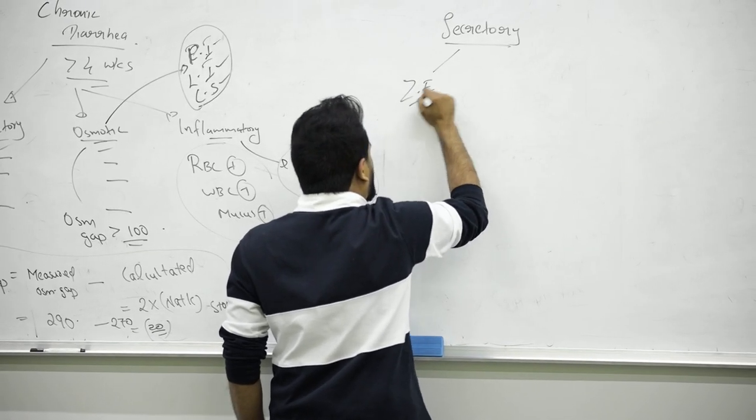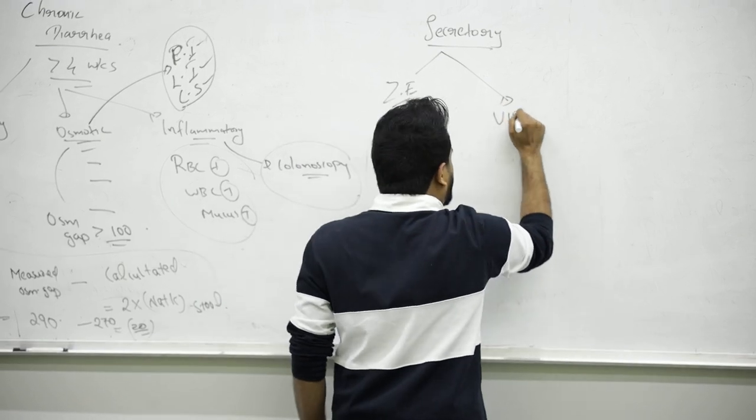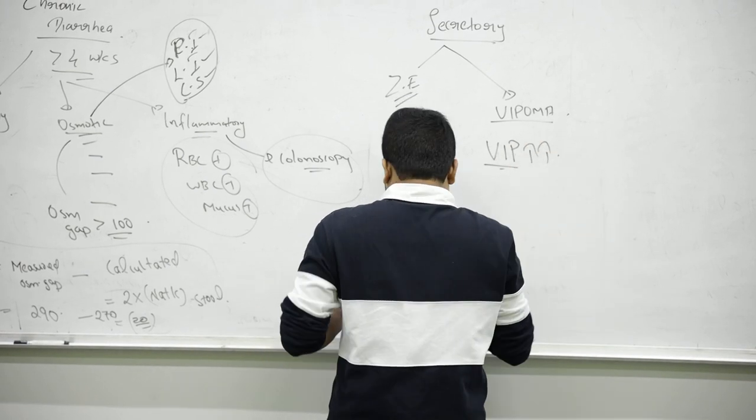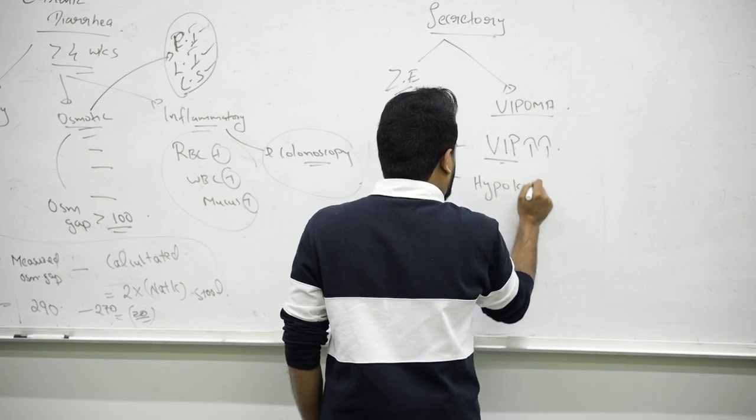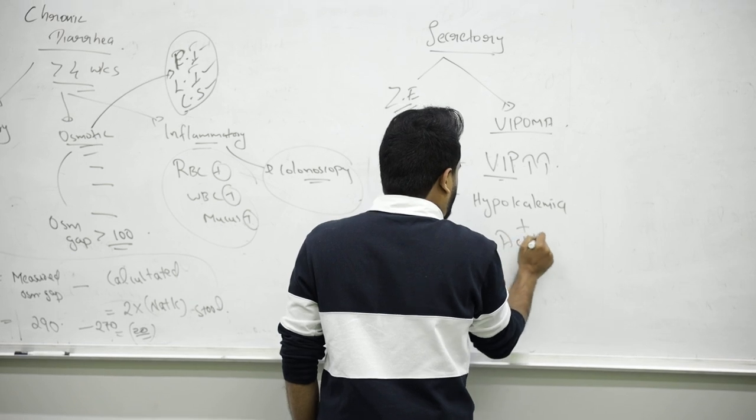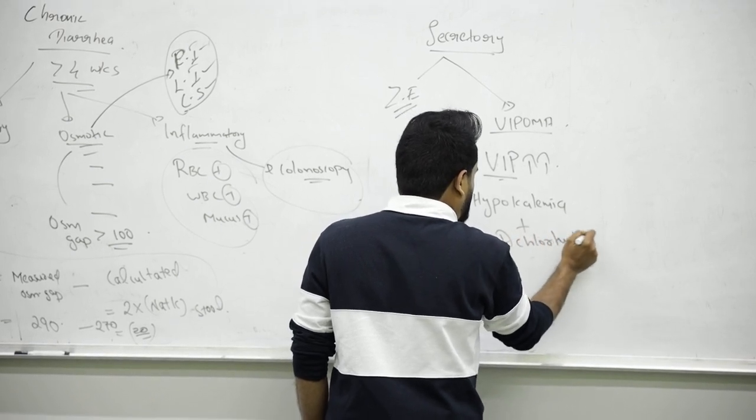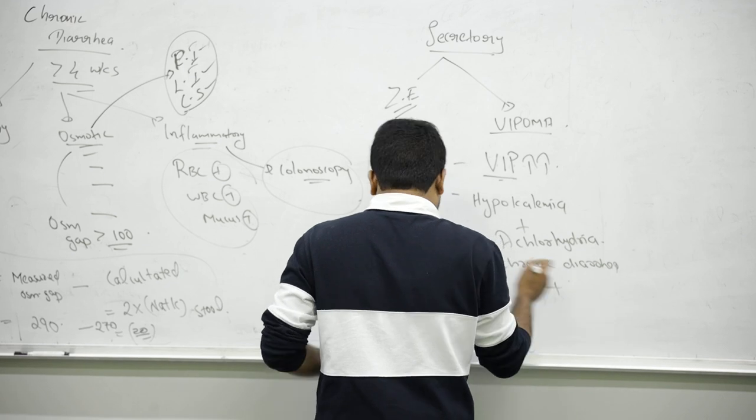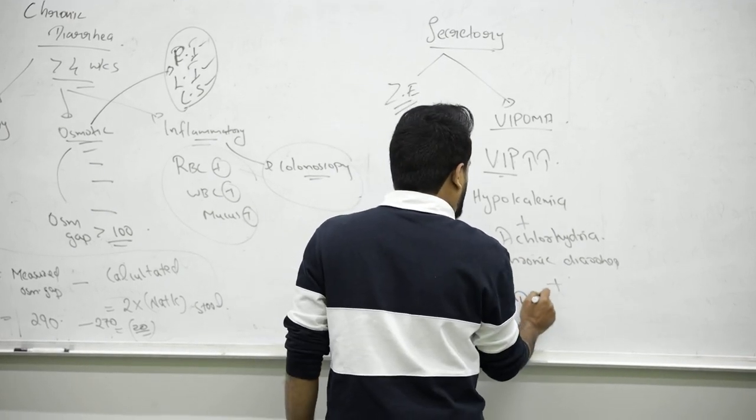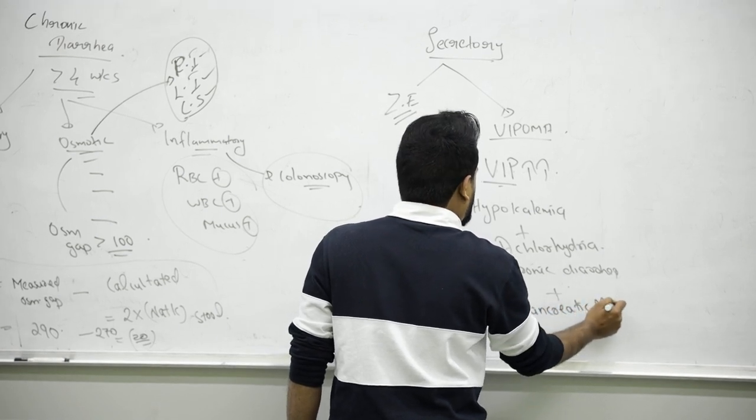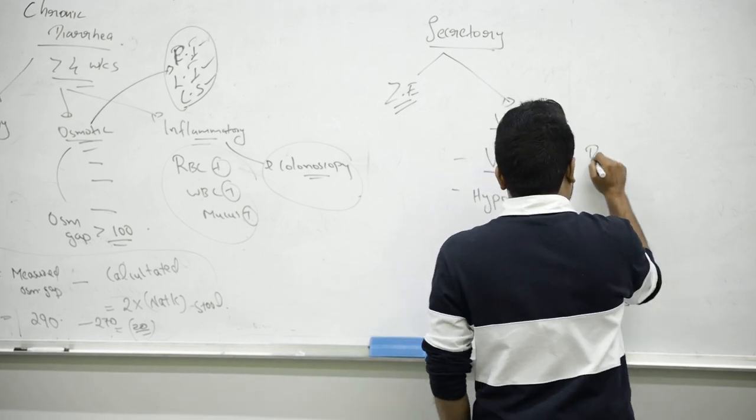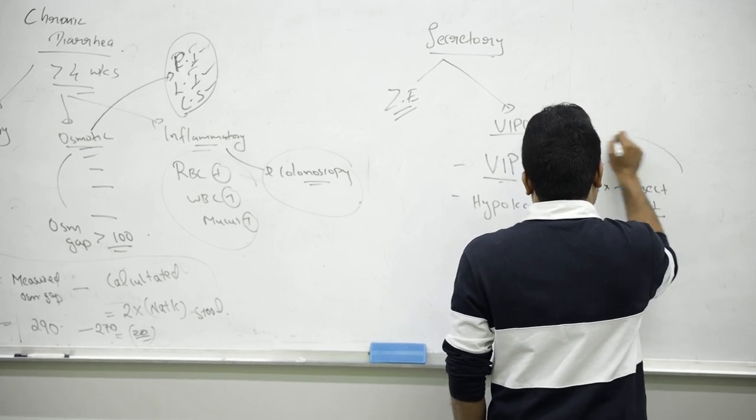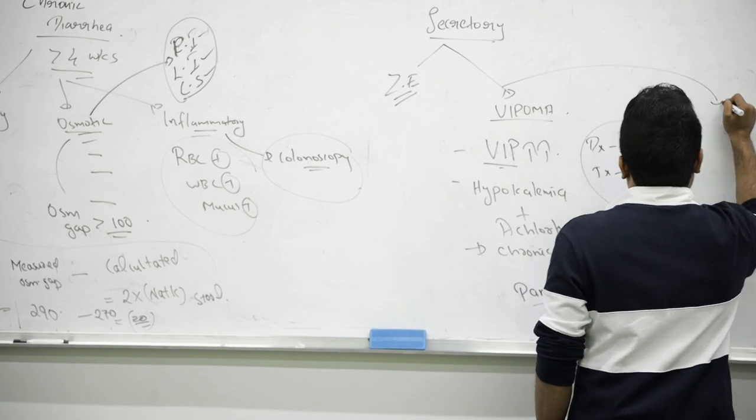There is something called VIPoma. VIP is vasoactive intestinal peptide, which will be increased. As a result, the patient will have hypokalemia and achlorhydria. If a patient complains of chronic diarrhea along with a mass, the patient will have a pancreatic mass. For diagnosing, check the level of VIP. For treatment, resect the tumor from the intestine. They are producing VIP.